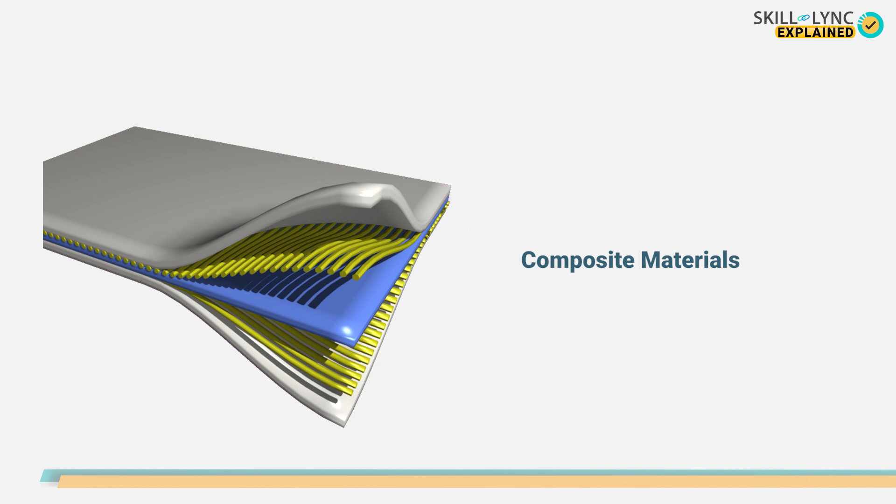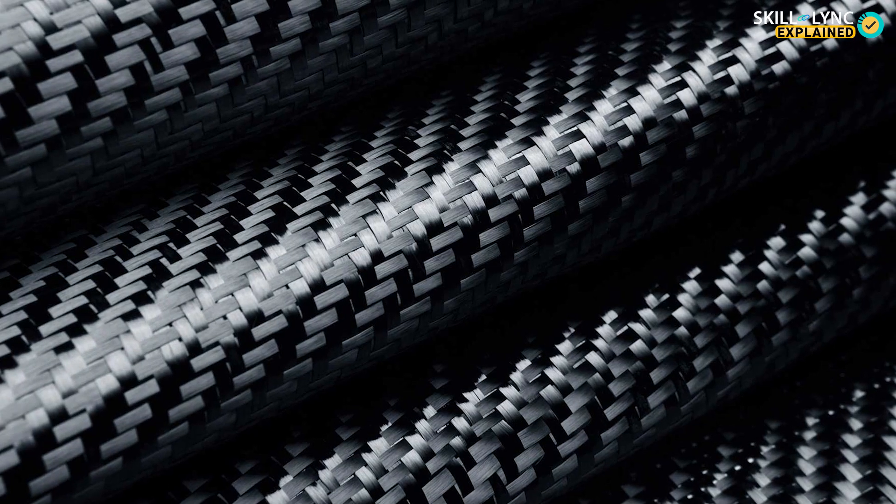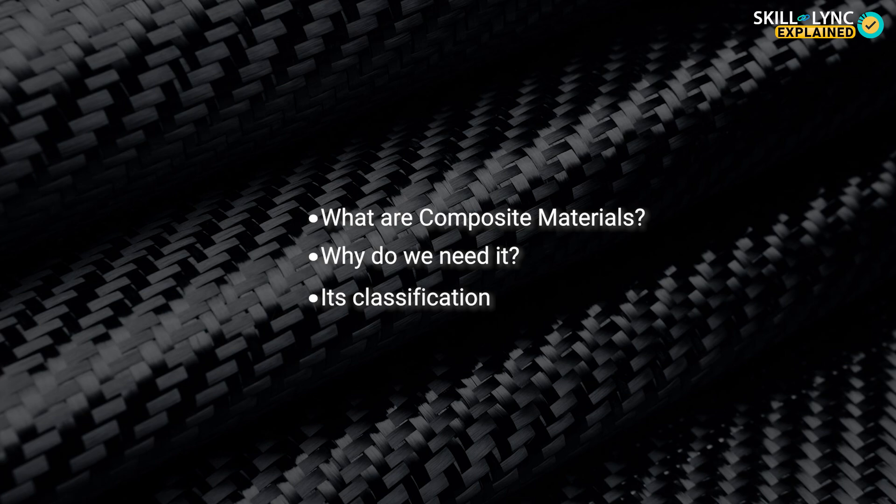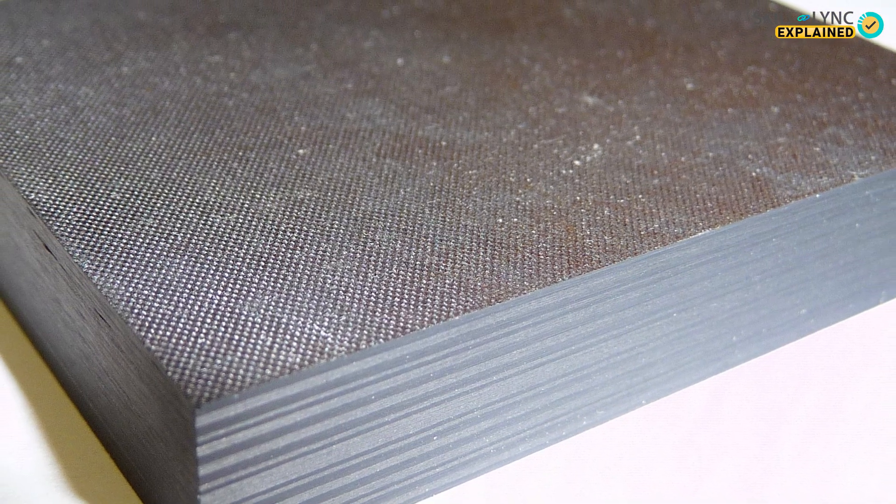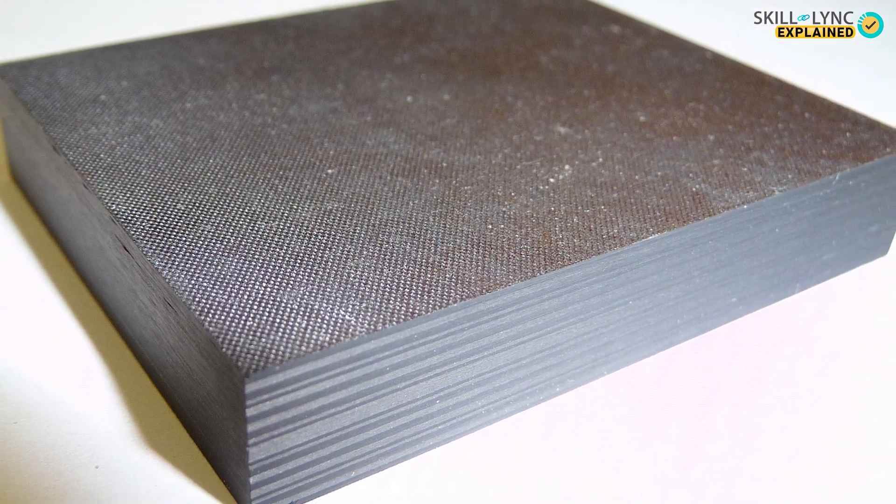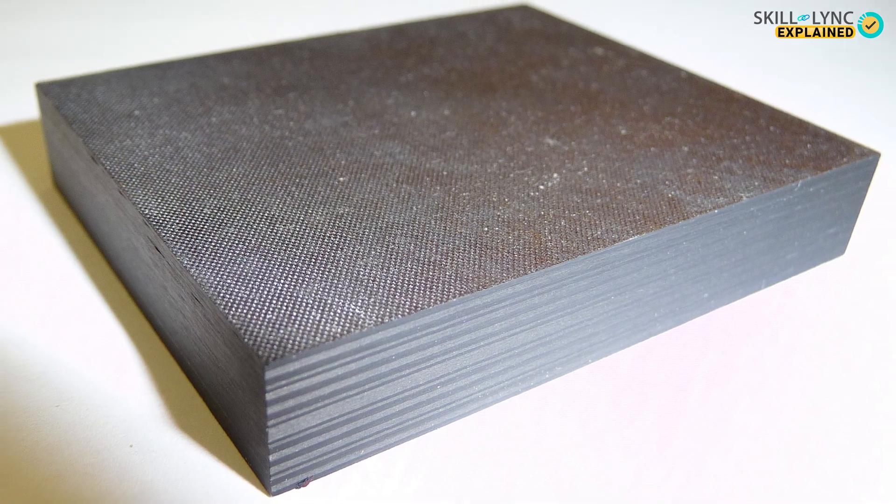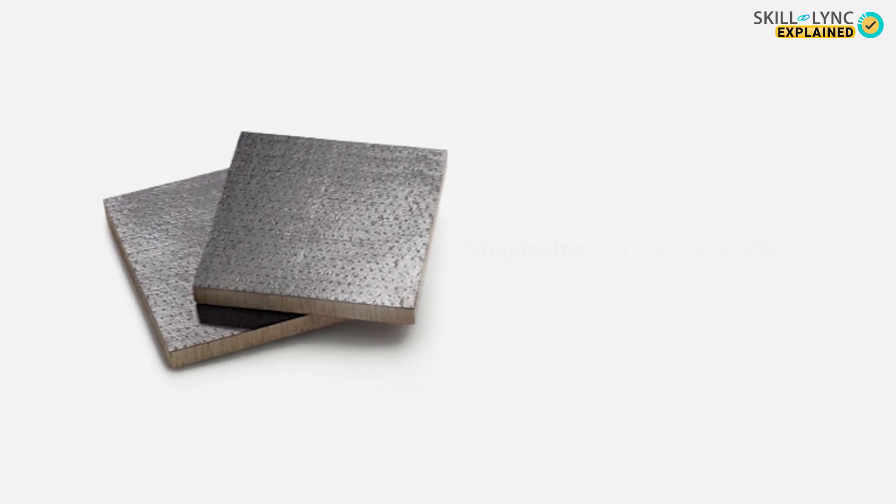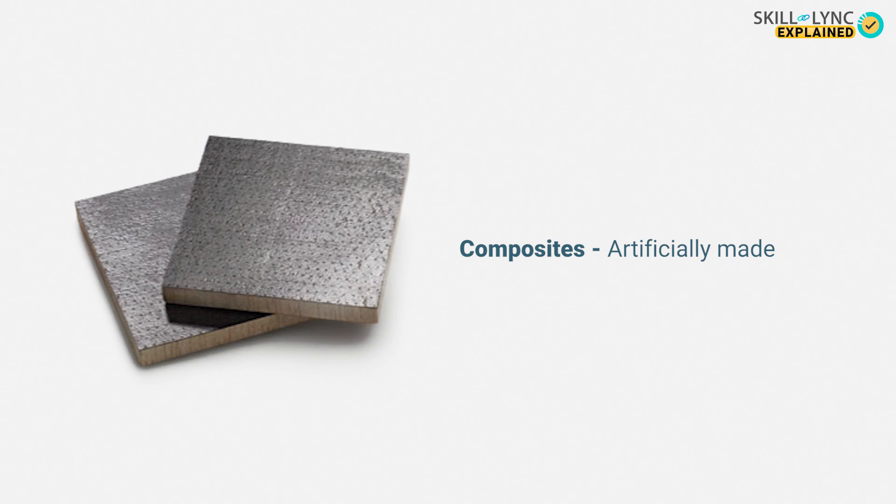And that is what we're going to discuss today. In this video, we'll be discussing what composite materials are, why do we need them, and their classification with some examples. Composites are multi-phase materials composed of two or more materials that are chemically distinct and can be distinguished by their interface. The properties of composite materials depend on the properties of the constituent elements.